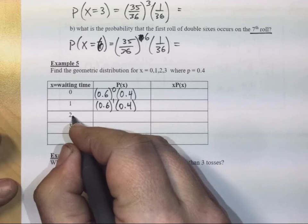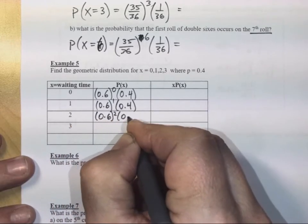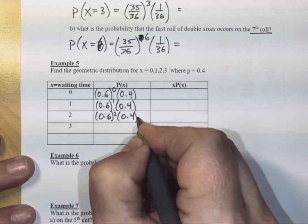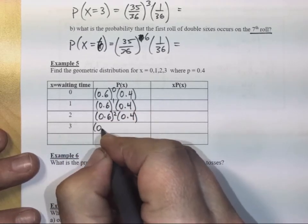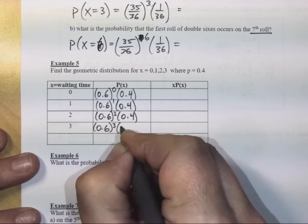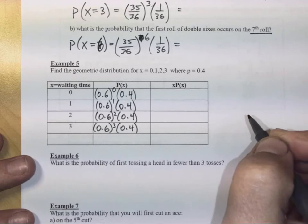If you had to wait twice, well, then you must have failed twice before you got success on the third try. And three, waiting time of three, means you must have failed three times before you finally got success on the fourth try, correct.